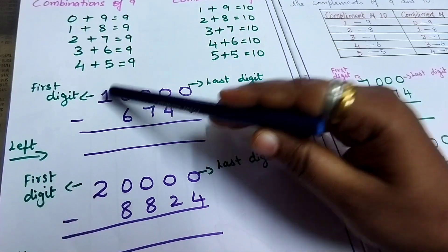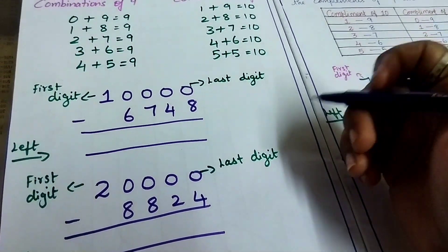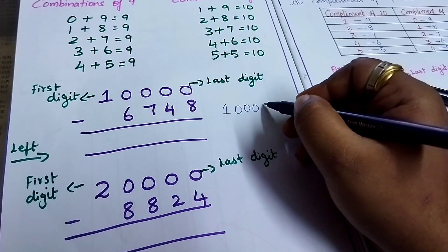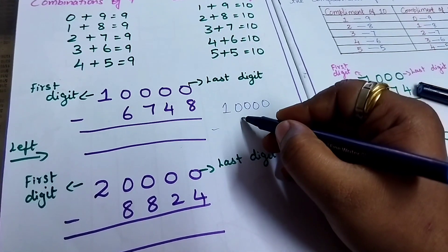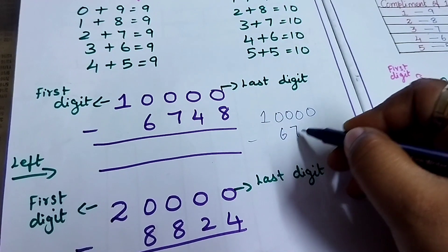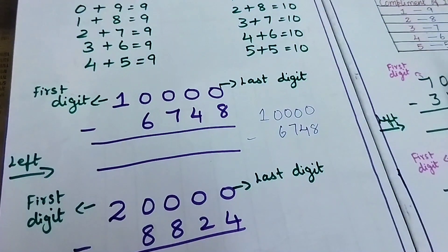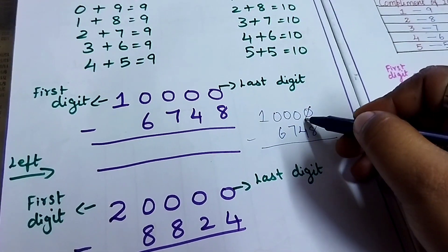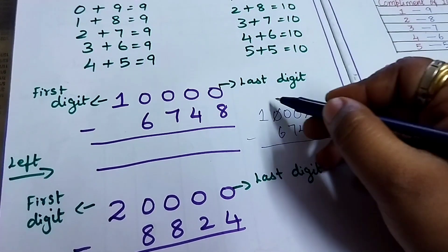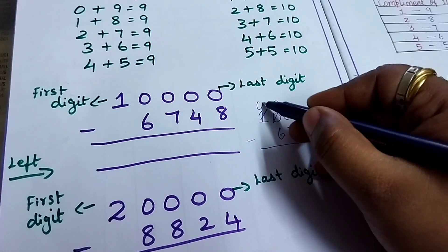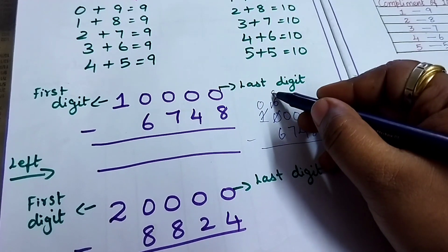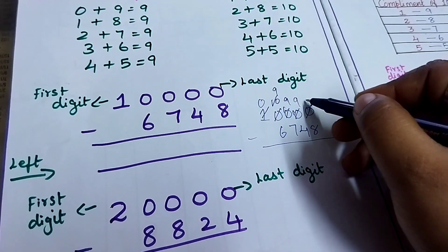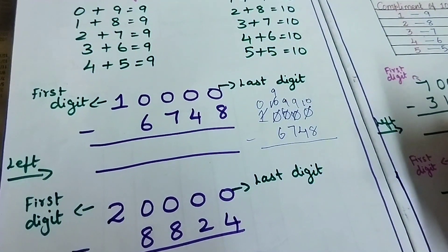Whatever is there - wait, I will write my question. Normally how will you do this question: 10,000 minus 6,748? Just subtract. How will you subtract the normal way? You can't subtract directly, so first you will borrow. You will make this as 10, then 0, then 9, 10, 9, 10, 9. Then at last you will borrow like this.